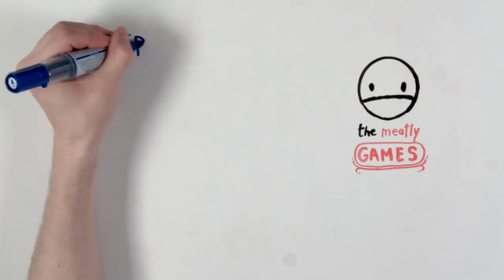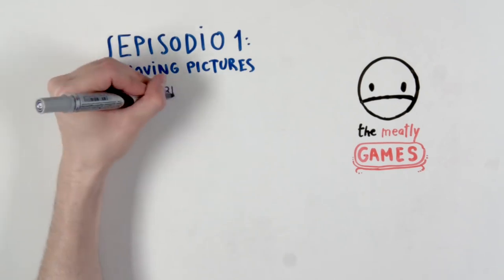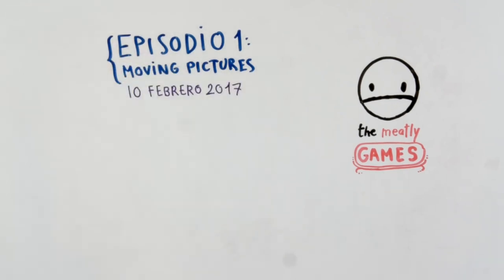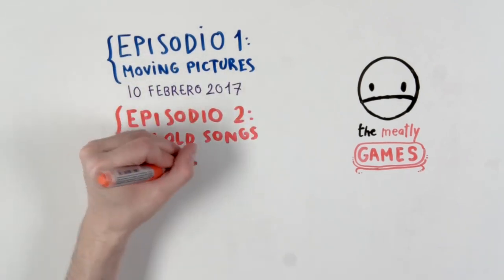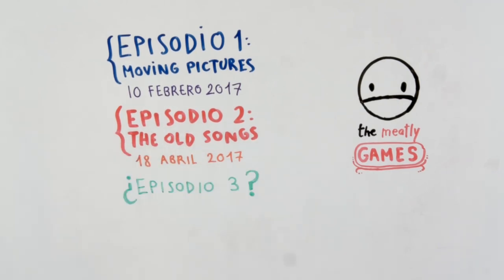The game has been designed by TheMeatly, and it's an episodic first-person puzzle survival horror video game. The first chapter, called Moving Pictures, was released on February 10th, 2017. On April 18th, 2017, the second part of the story, The Old Songs, was released.